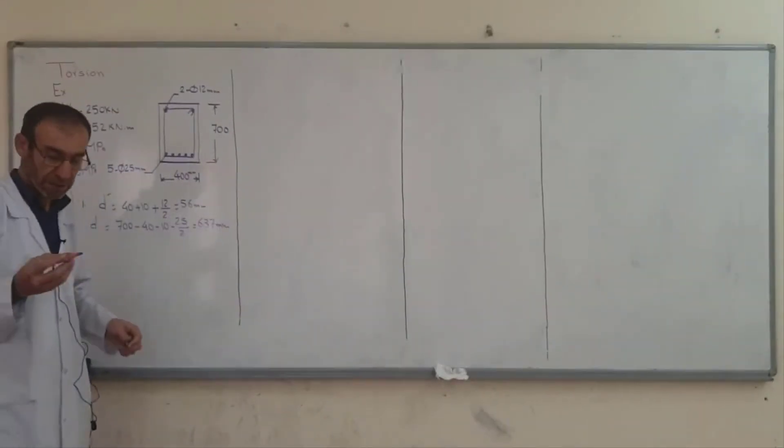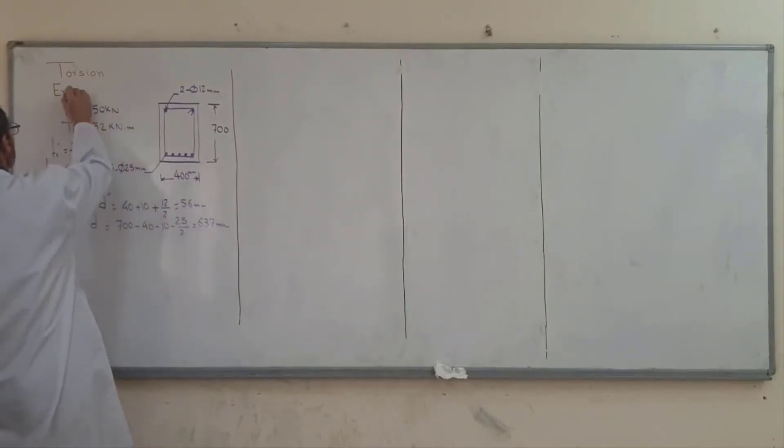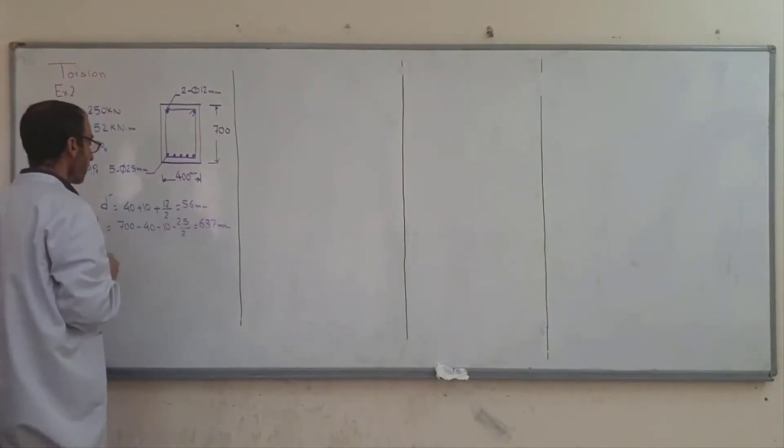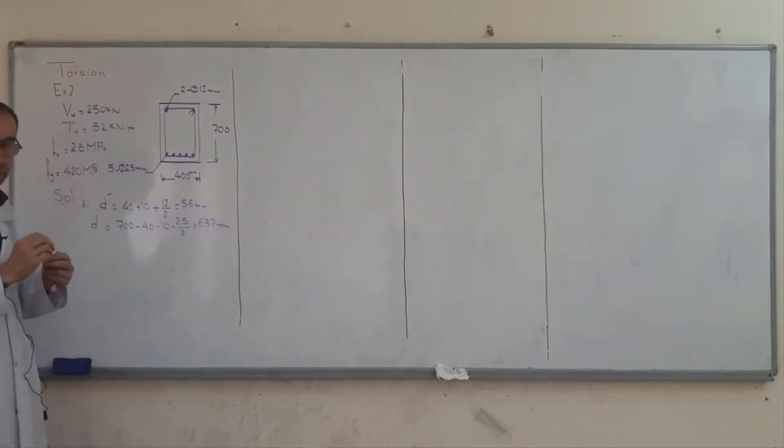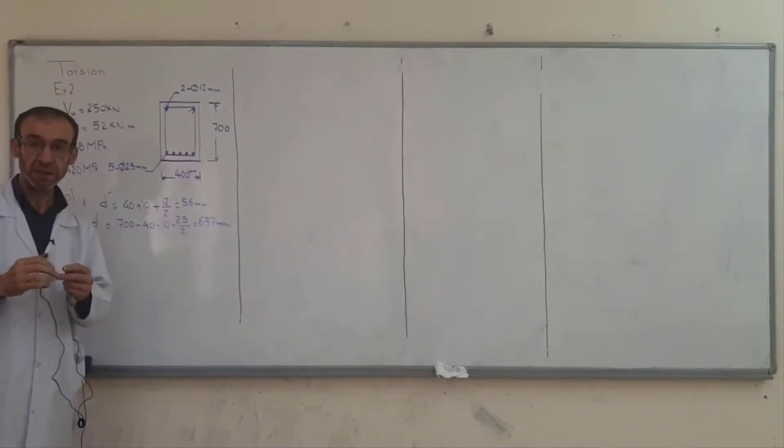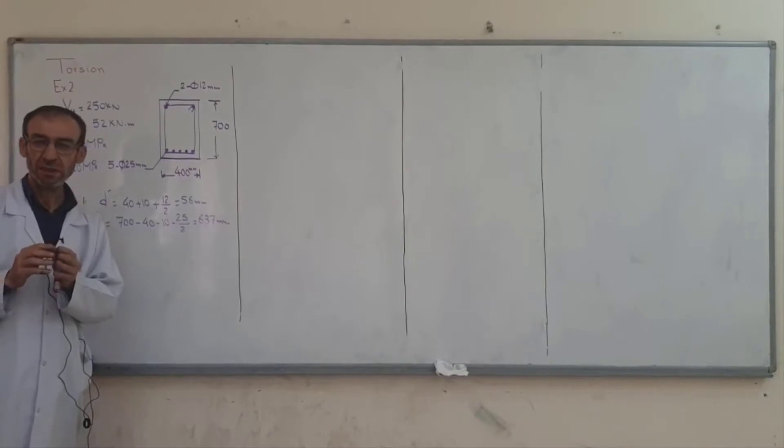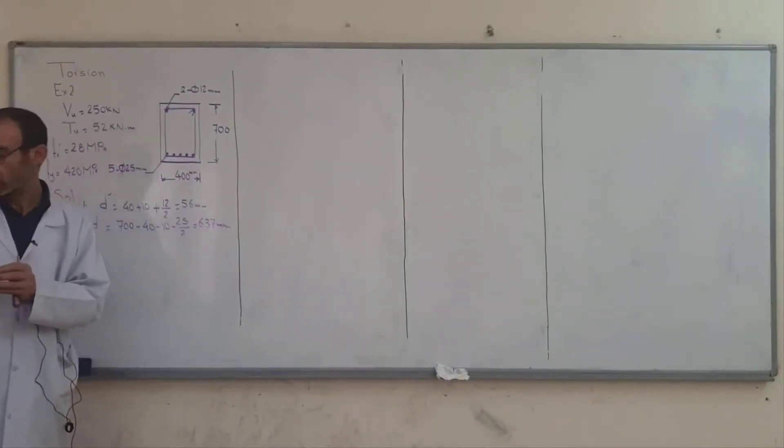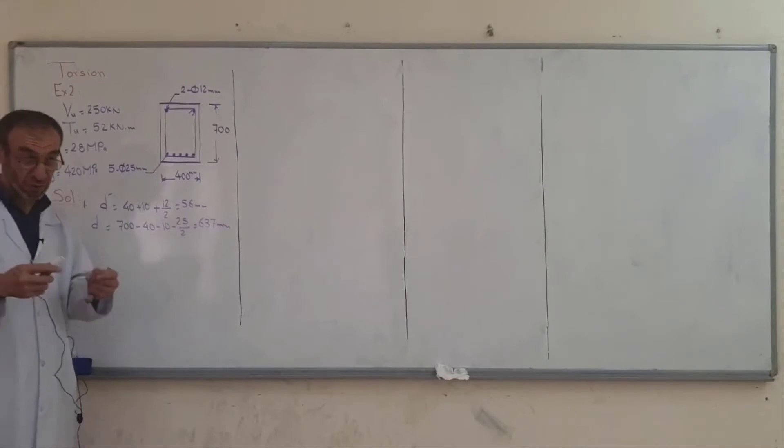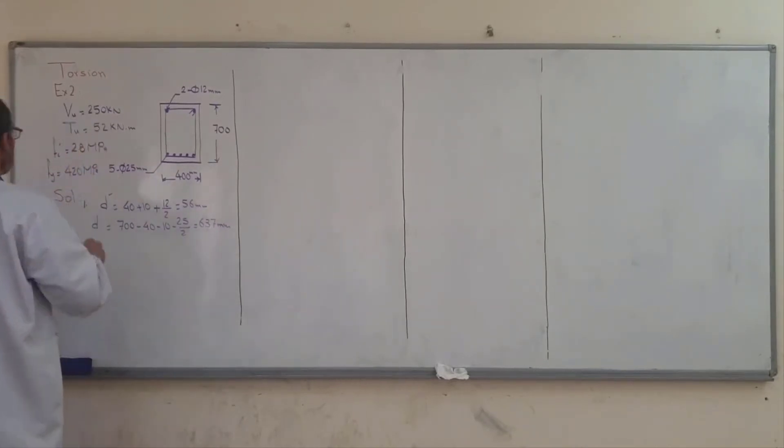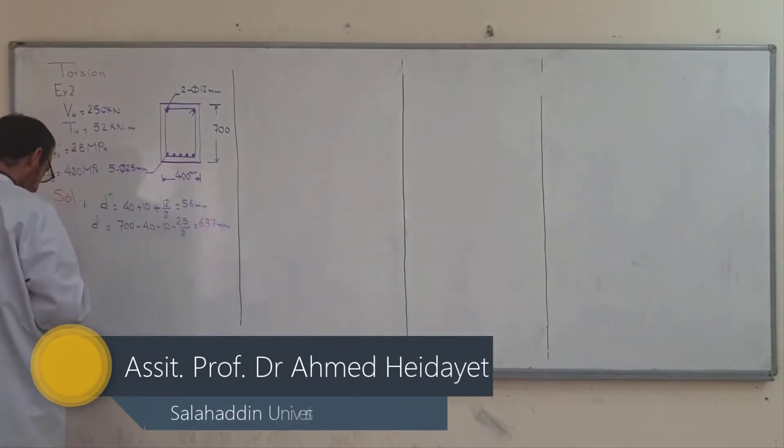Okay, this is the second example for torsion. The difference between this example and the previous example is here we have compatibility torsion. We can reduce according to the ACI code the applied torsion. The applied torsion is 52 kN. How can we reduce the applied torsion? This is called compatibility torsion.